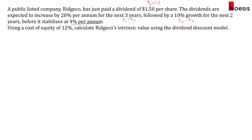Whenever there is a different stage of growth — in other words, if there is no constant growth rate from the first year to the fifth year — we will just calculate the dividends for those individual years. So what we're going to do is calculate D1 to D5. On the timeline we have: 0, 1, 2, 3, 4, and 5.